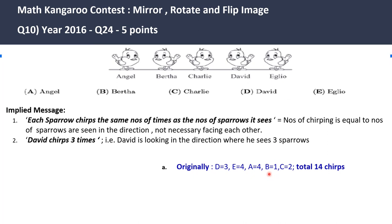For Bertha, since she is looking in one direction and there is only one bird, we will count one chirp in her account. And for Charlie, we will count these two birds as two chirps. So if we add this total, it comes to 14 chirps.